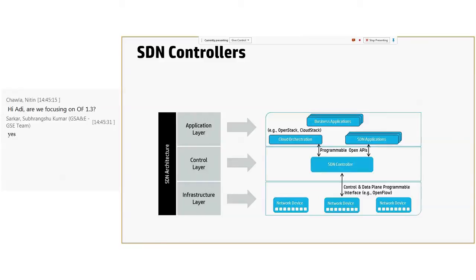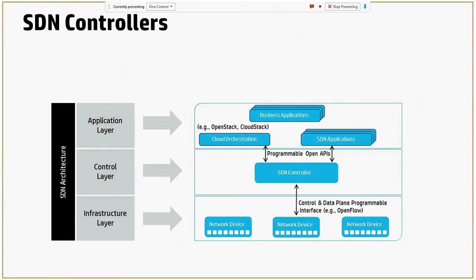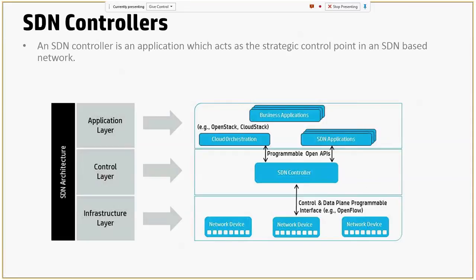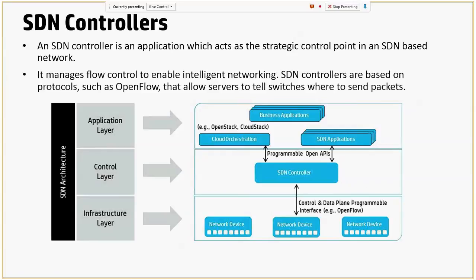What is an SDN controller? An SDN controller is supposed to be the brain of the network — it is the one taking all the decisions, and it is decoupled from the switch itself. An SDN controller essentially has about three various kinds of layers: the application layer, the control layer, and the infrastructure layer. There is actually a set of programmable open APIs like REST, with which third-party applications and orchestration layers talk to the SDN controller. The SDN controller in turn talks to all of the network devices using OpenFlow. It is the strategic control point in the SDN network.